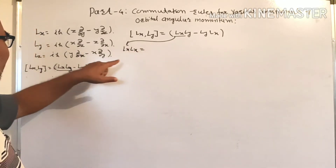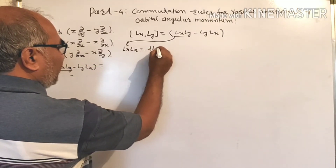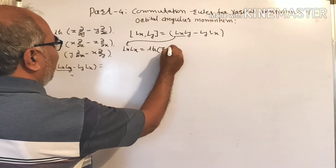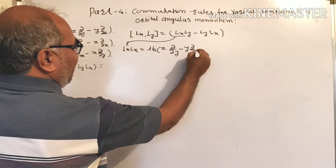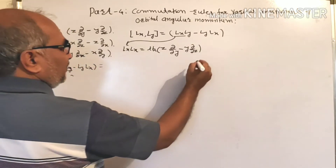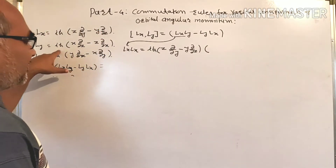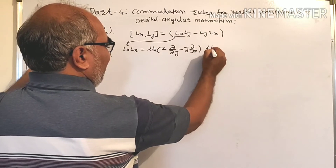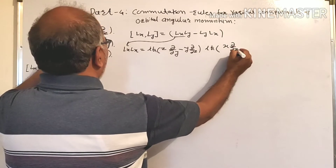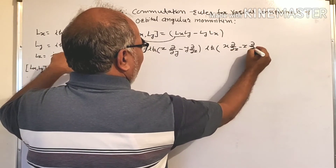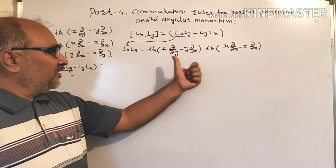Consider the first part of this equation: LxLy. We already know that Lx, as written on the board, is iħ(z ∂/∂y − y ∂/∂z). This is Lx. Into Ly, and Ly is iħ(x ∂/∂z − z ∂/∂x).